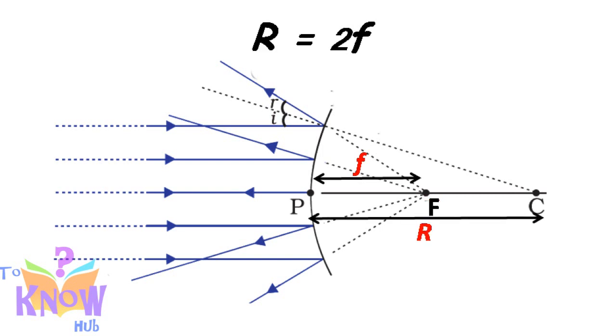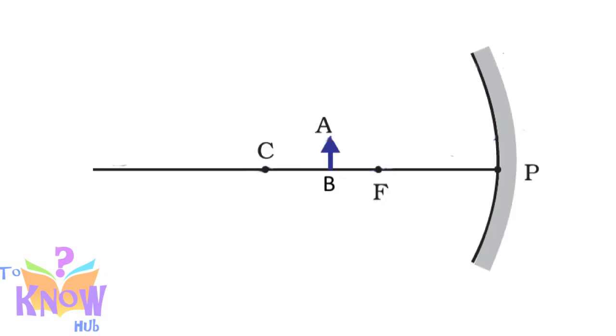Now look very closely why these elements are so important. Say there is an object AB in between f and c on the principal axis. A ray is coming from point A. This ray is parallel to principal axis, so after reflection it will pass through principal focus.